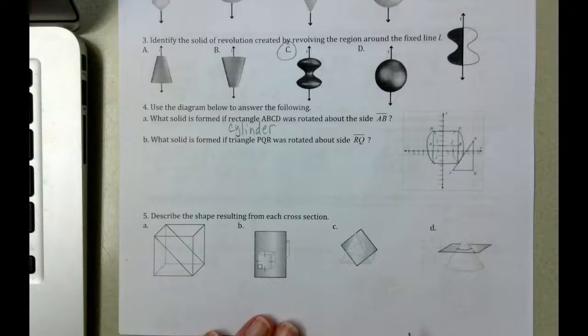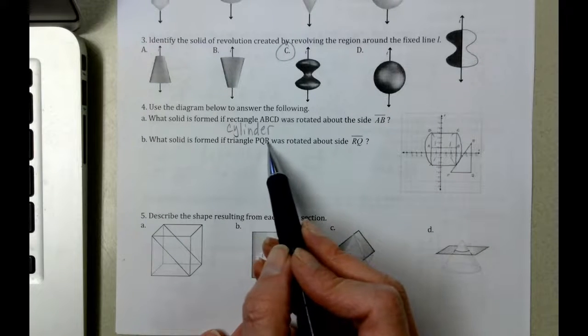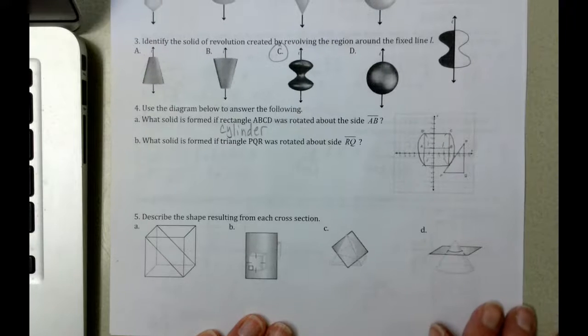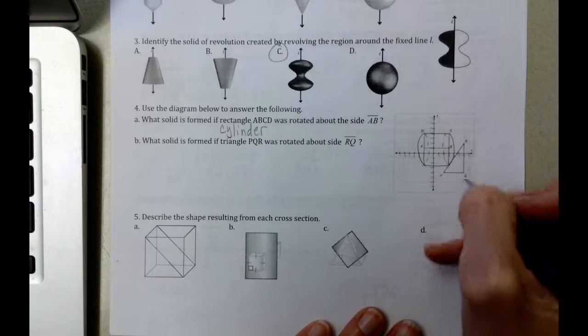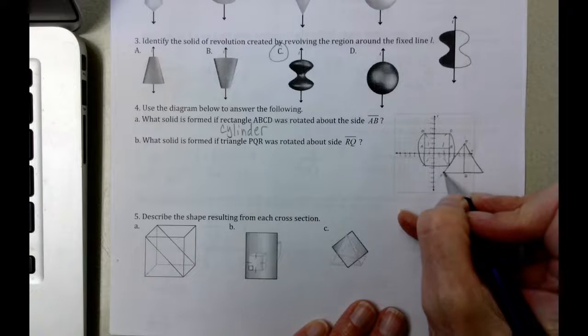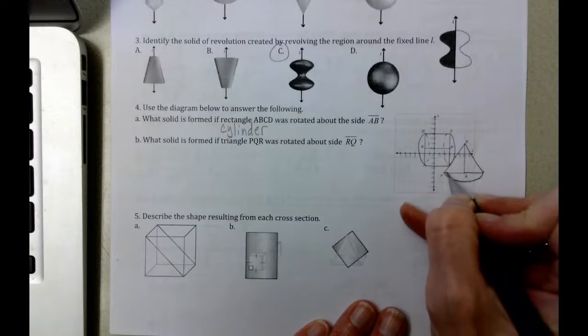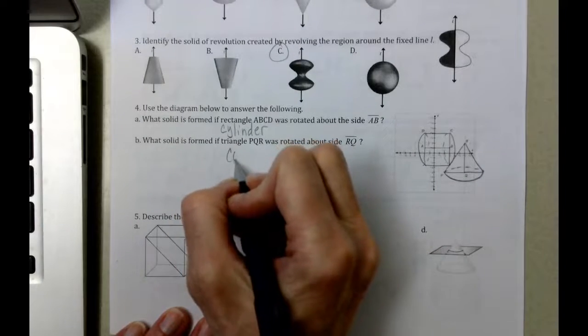We're going to do the same idea here. Which solid is formed if triangle PQR was rotated about side PQ, or sorry, RQ? Here's RQ. So if we copy this here and we make it three dimensional, what we see is that we have a cone.